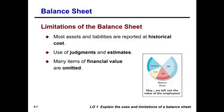What are some limitations of the balance sheet? Most assets and liabilities are reported at historical cost — the key word is 'most,' not all of them. A lot of assets are reported on something other than historical cost, such as fair value, net realizable value, or lower of cost or market. Historical cost tells us how much we paid for it and doesn't change in value, so it's not always very useful.